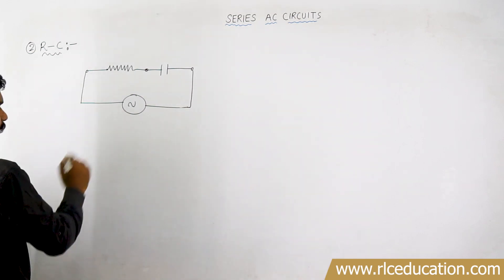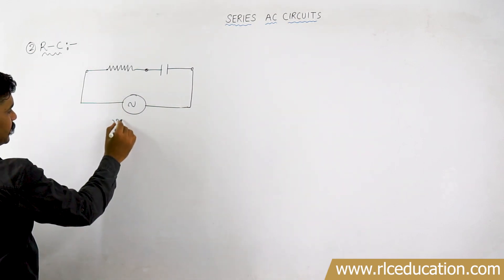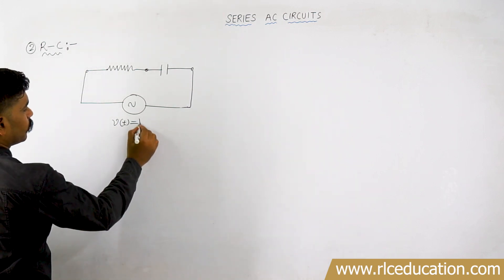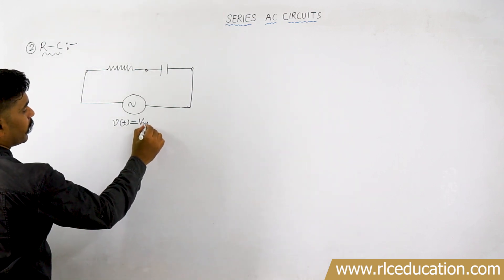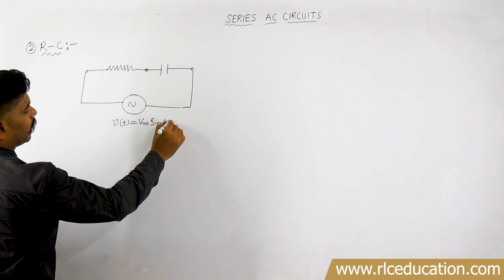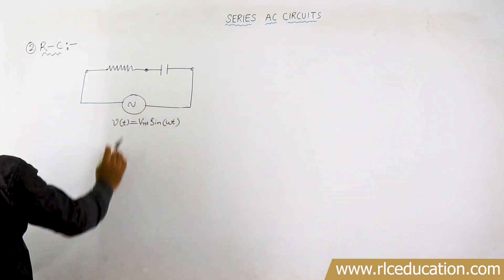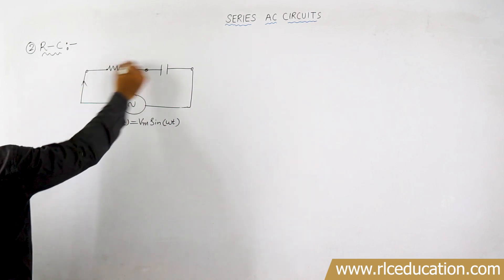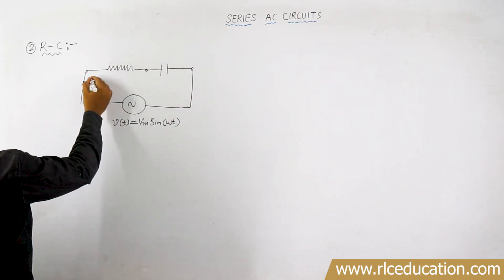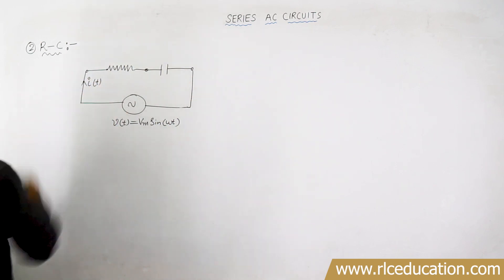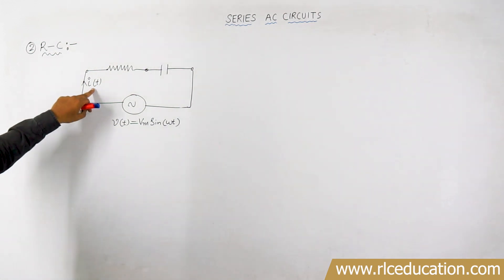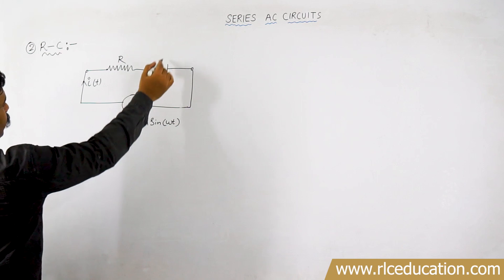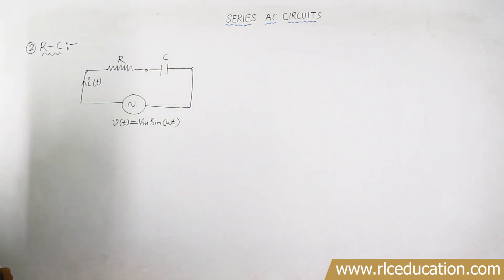The AC source produces some AC voltage. Let us say the instantaneous voltage equation is V(t) = Vm sin(ωt). This is the AC voltage produced by the source. When voltage is applied and the circuit is closed, you will get some current I(t), which is also alternating and a function of time. Let us say the value of resistance is R and the value of capacitance is C.